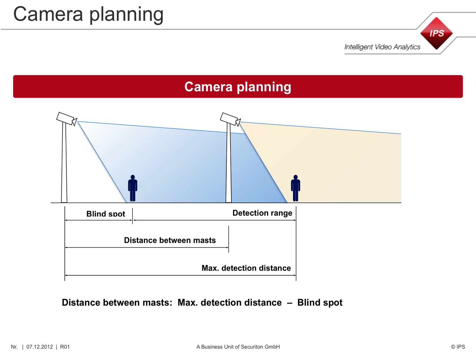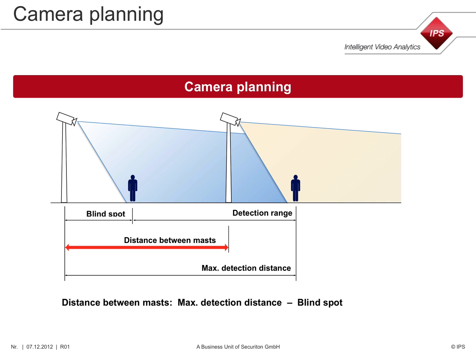The maximum detection distance is the distance between the camera and the target at the point where the height of the target is 7% of the image height and the width of the target is 2% of the image width. The maximum detection range is equal to the maximum detection distance minus the blind spot. The distance between the camera masts must be equal to the maximum detection range.